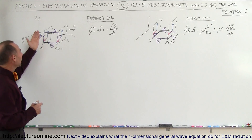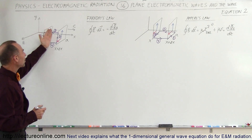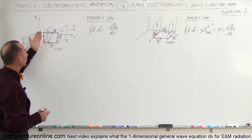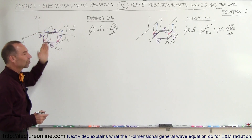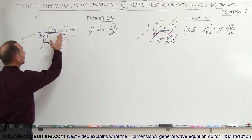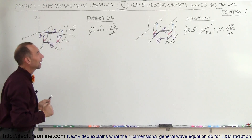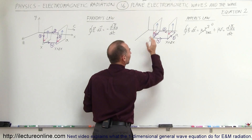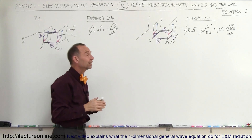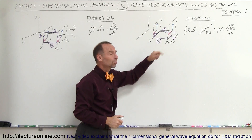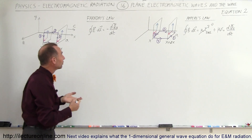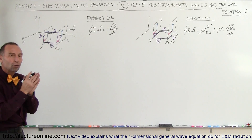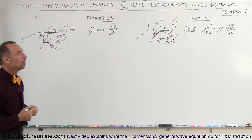As the wave travels a small distance from x to x plus delta x, the electric field will change just a slight amount — it's slightly different at one point compared to another. The same is true for the magnetic field, which will be slightly different between x and x plus delta x, because the magnitude of the oscillations change over position and over time, just like any wave.